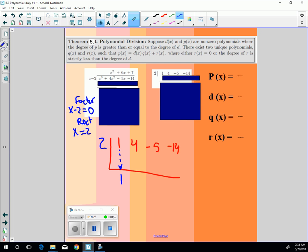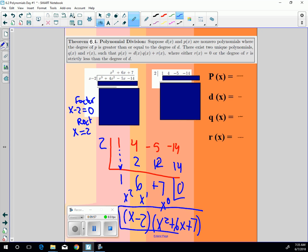Drop the 1. Multiply by 2. Add those together. Multiply by 2 gives you 12. Add those up and get positive 7. 7 times 2 is 14, which adds up to 0. So this is x to the 0, x to the 1, x to the 2. You'll get x minus 2, because that's what the factor is, times x squared plus 6x plus 7. And there's the synthetic method for finding that.